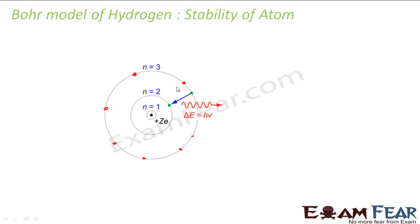Since energy is not lost, it is moving with a particular velocity — there is no friction there, so it just keeps moving in the same orbit. The concept he told was that energy is the same for any electron in a particular orbit. Only when the electron jumps from a higher orbit to a lower orbit does it emit energy, or when it jumps from lower to higher, it needs some energy.